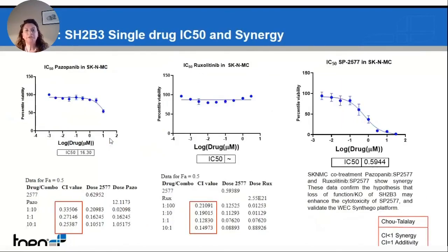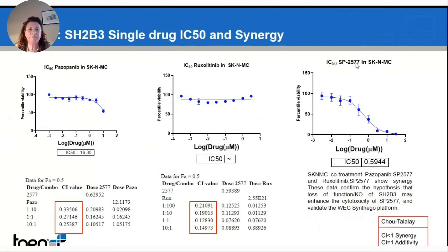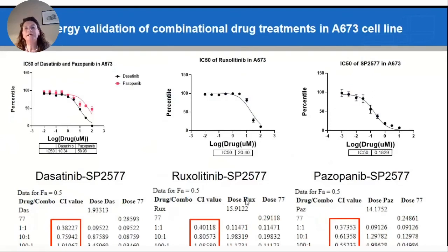We observe similar results with SH2B3 — the inhibitors of this pathway are pazopanib and ruxolitinib, two FDA-approved drugs. When we use those drugs as single agents on Ewing sarcoma lines, we see no cytotoxic effect, while our LSD1 inhibitor has a cytotoxic effect with IC50 in the nanomolar range. However, when we combine SP2577 with pazopanib or ruxolitinib, the combination index shows very high synergy between the drugs in both cases, suggesting this can be a very powerful combination for clinical treatment of Ewing sarcoma patients. Similar results were obtained in another Ewing sarcoma cell line, A673.